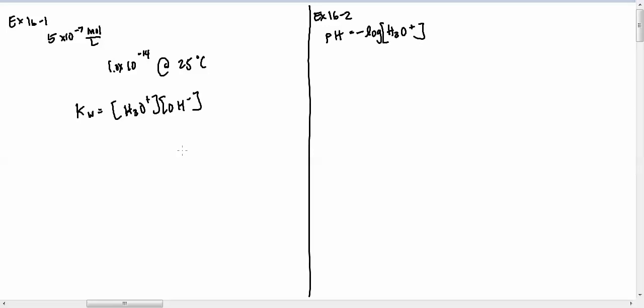And so if I want to figure out what my concentration of hydroxide ions are, I simply have to solve for it. So the concentration of hydroxide ions is equal to Kw divided by the concentration of hydronium ions.